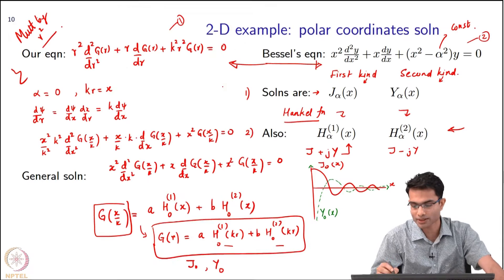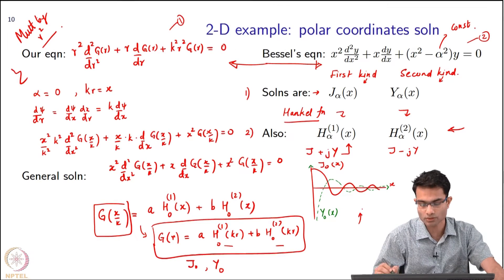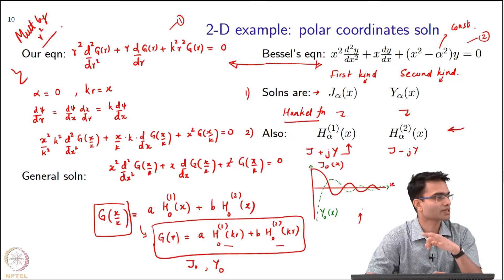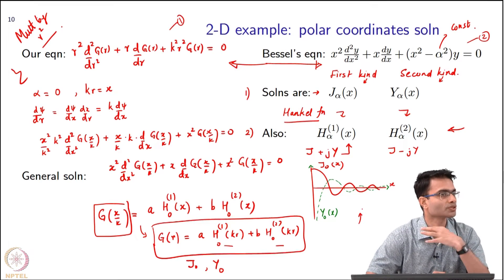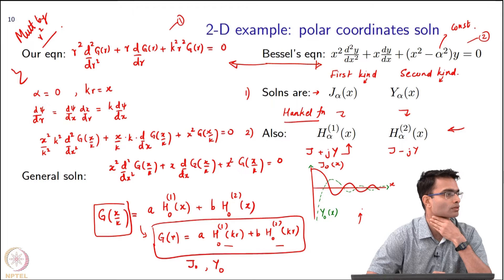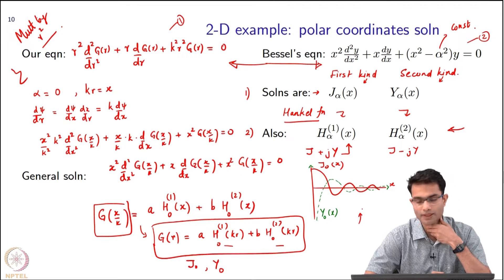When I look back at the plots that I have shown you of J₀ and Y₀, if I take any linear combination of J₀ and Y₀, will both of them go to zero at large x? Yeah, individually each of them decays.